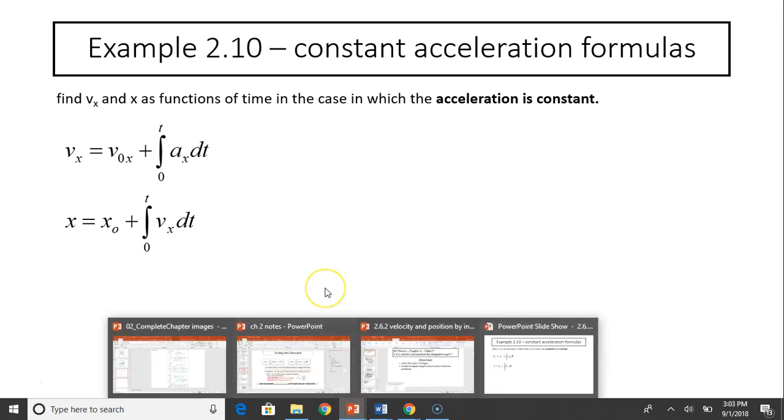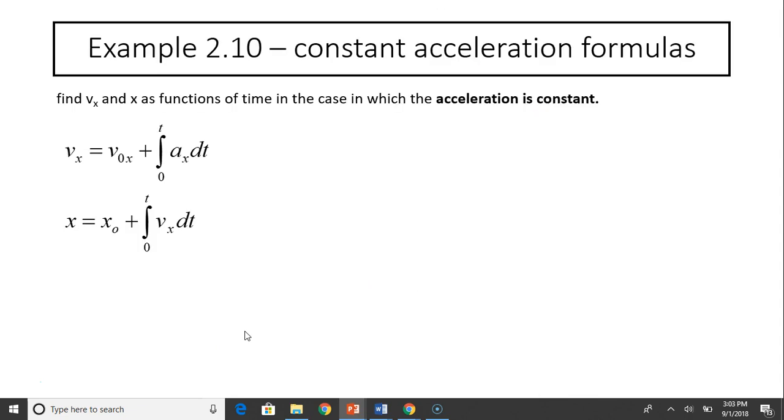Now let's take a look at the next example. Find vx and x as a function of time in the case in which acceleration is constant. So in the top equation, acceleration is constant. You find that vx, acceleration is constant, use multiplier rule. You're factoring acceleration out. So the integral of dt is just t. So your answer is vx equals v_not_x plus ax times t. This is the equation for constant acceleration, how to find velocity when acceleration is constant.